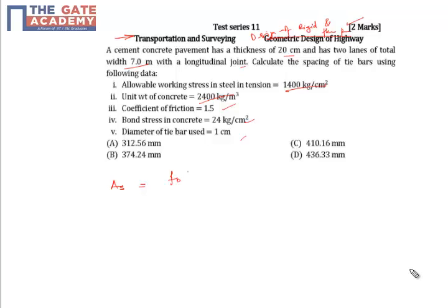That is working stress in steel. So A equals 1.5 × 3.5 × 20 × 2400 divided by 100 × 1400.